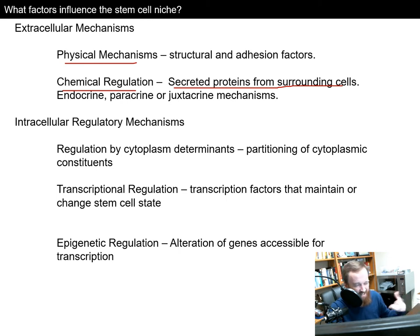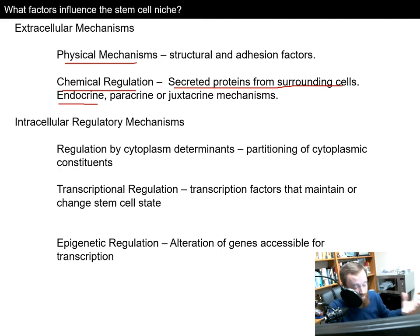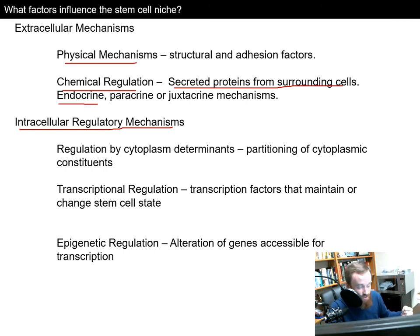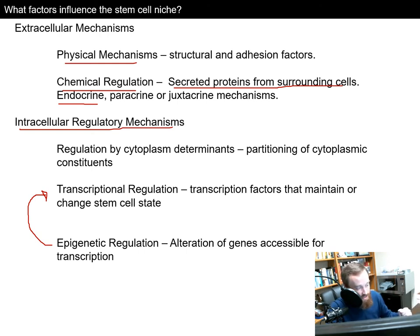Paracrine is local signaling, roughly 10–15 cell distance. Endocrine uses the endocrine system — long-range hormone signaling using the vasculature of blood vessels. There are also intracellular regulatory mechanisms: determinants within the cytoplasm, transcriptional regulation including gene turning on and off and changes in RNA abundance, as well as epigenetic regulation such as methylation and histone modifications that determine what genes are turning on or off. All of these play roles in determining the niche of the stem cell and what it will eventually become.